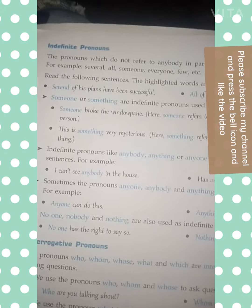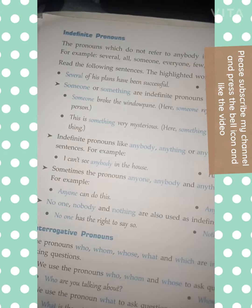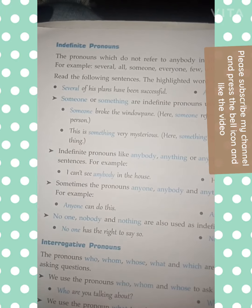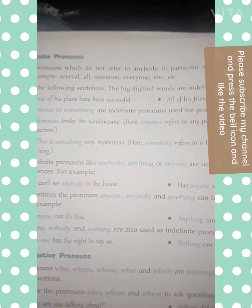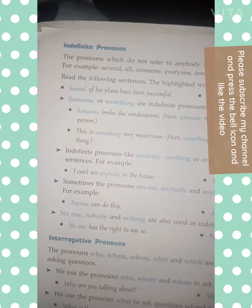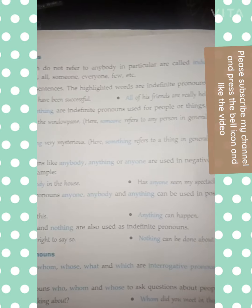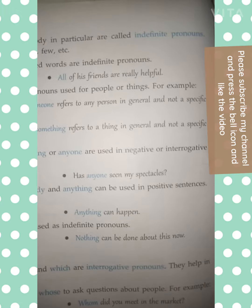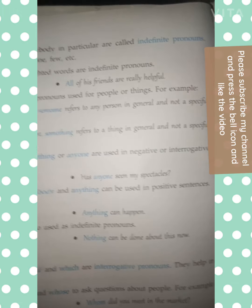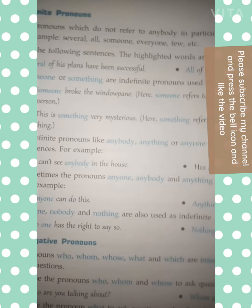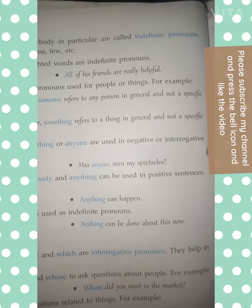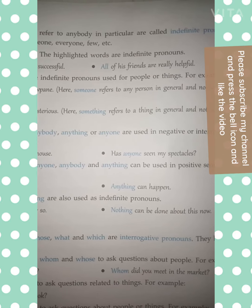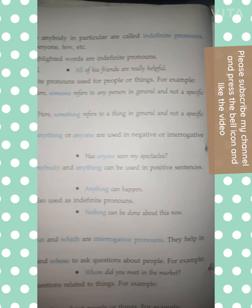Next, indefinite pronoun. The pronouns which do not refer to anybody in particular are called indefinite pronouns. For example: several, all, someone, everyone, few, etc. Read the following sentences — the highlighted words are indefinite pronouns. 'Several of his plans have been successful.' 'All of his friends are really helpful.' 'Someone' and 'something' are indefinite pronouns used for people or things. For example: 'Someone broke the window pane' — 'someone' refers to any person in general and not a specific person.